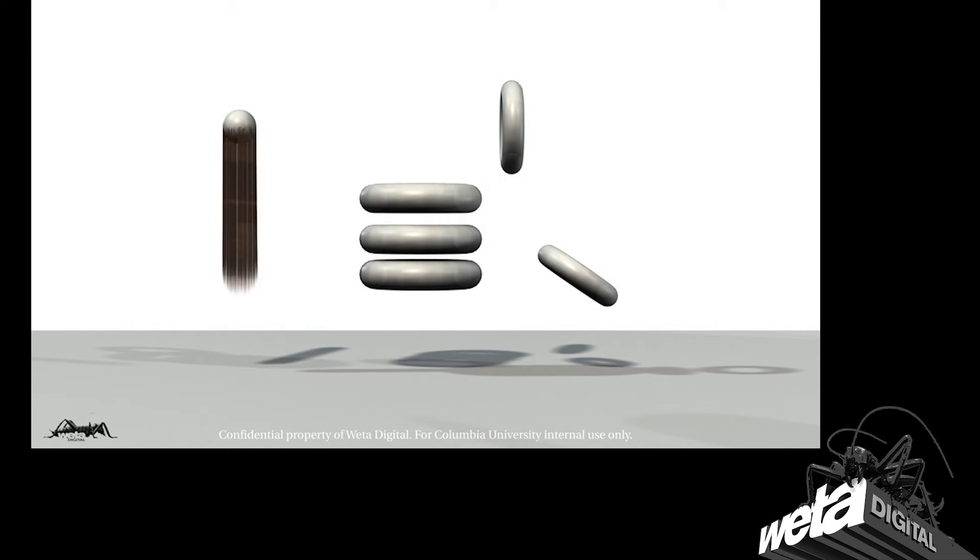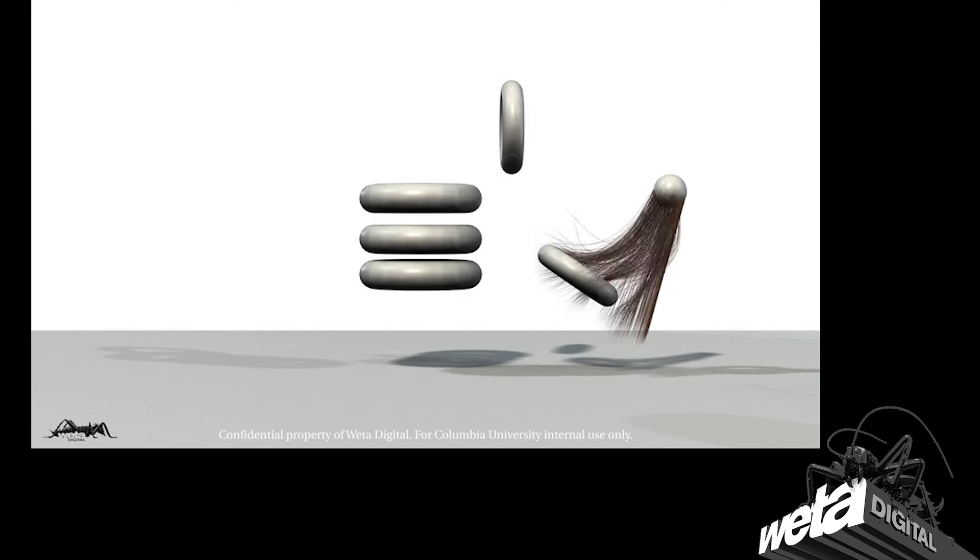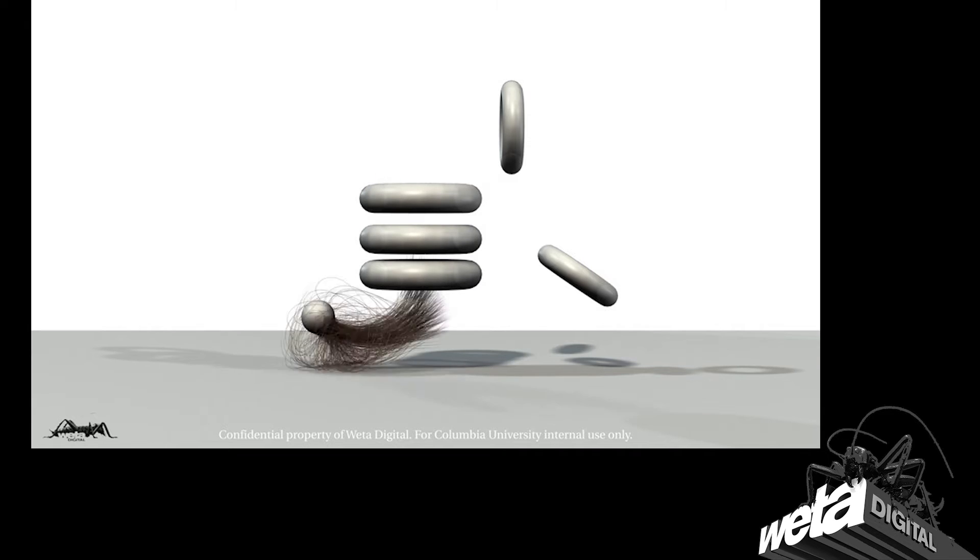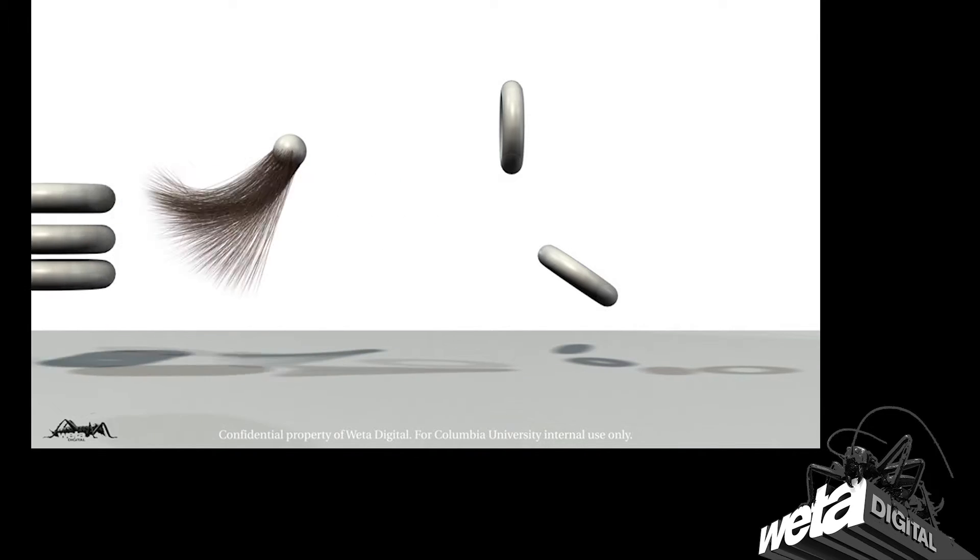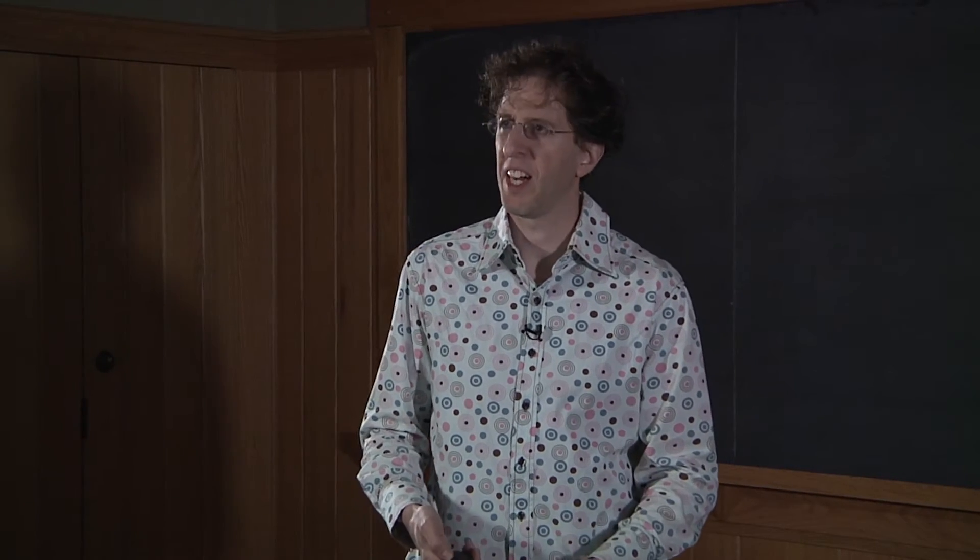So here's a take from Weta Digital where they were doing some exercises with hair, putting hair through the ringers. And as the hair moves forward in time, it's using these kinds of algorithms. But of course there's more to moving the hair than just moving it forward in time.